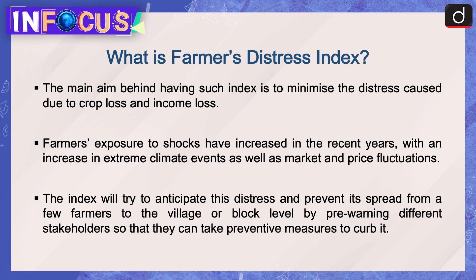Now let's discuss what is Farmer's Distress Index. The main aim behind having such an index is to minimize the distress caused due to crop loss and income loss. Farmers' exposure to shocks has increased in recent years with an increase in extreme climate events as well as market and price fluctuations. The index will try to anticipate this distress and prevent its spread from a few farmers to the village or block level by pre-warning different stakeholders so that they can take preventive measures to curb it.